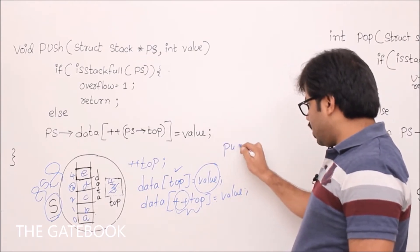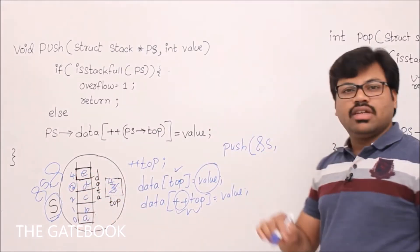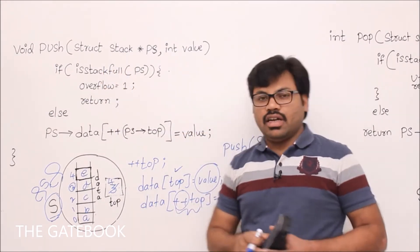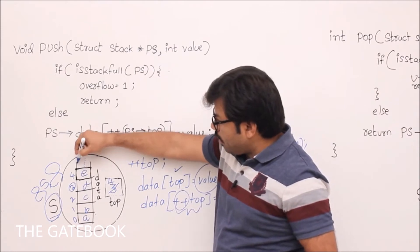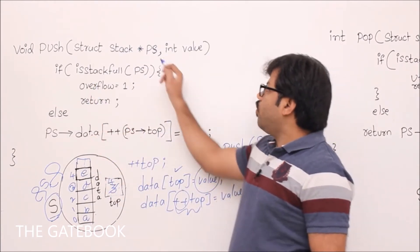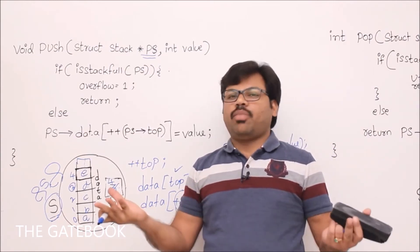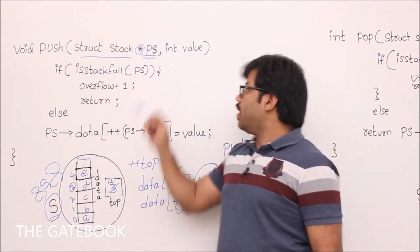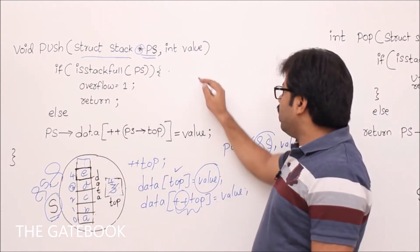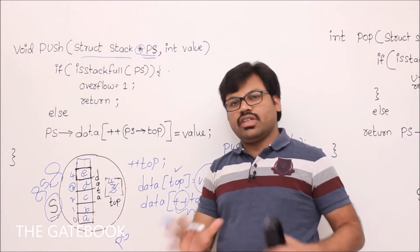Let me show the signature of the push method. In push, what do I require? To access the structure, someone should pass address of S and value. Now, since you are passing the address of the structure, who is capable of holding that? A pointer to the structure — that's why we have star PS. If PS takes the address, we need to learn how to access the array and top variable through it.